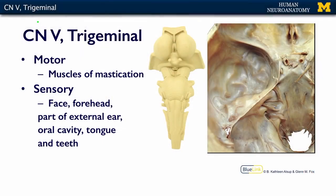The fifth cranial nerve, or the trigeminal nerve, is a mixed cranial nerve, and it contains both motor and sensory modalities. It's motor to the muscles of mastication, and it's sensory for your entire face, your forehead, part of your external ear, your oral cavity, the anterior part of your tongue, and your teeth.